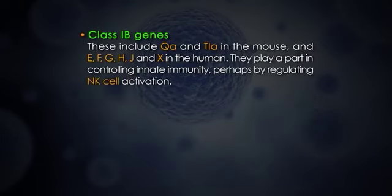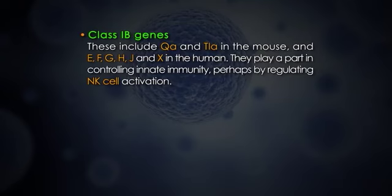Class 1B genes include QA and TLA in the mouse, and E, F, G, H, J, and X in the human. They play a part in controlling innate immunity, perhaps by regulating NK cell activation.